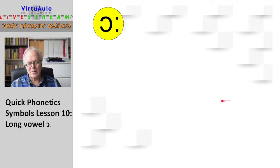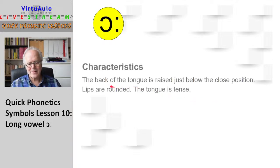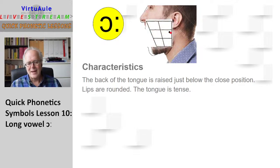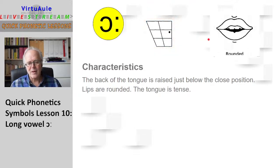Let's look at it a little bit closer — the characteristics. The back of the tongue is raised just below the close position. The lips are rounded and the tongue is tense. If we see the diagram with the face, the sound is exactly the same as the short sound, just longer — just below the close position, in the back. The lips are rounded, so you have this kind of position: "awe."